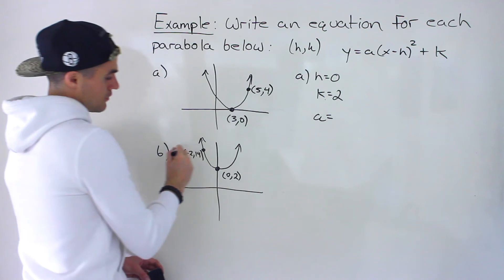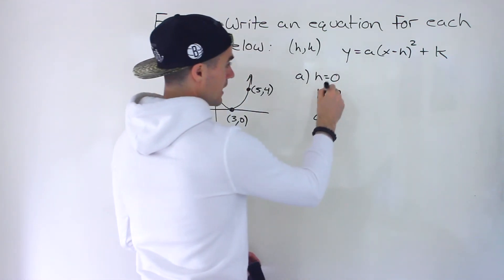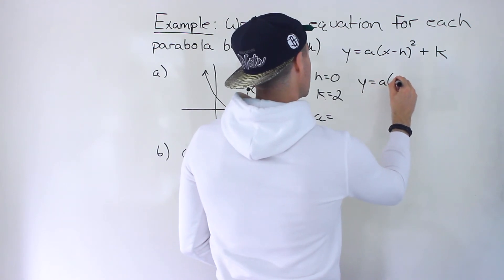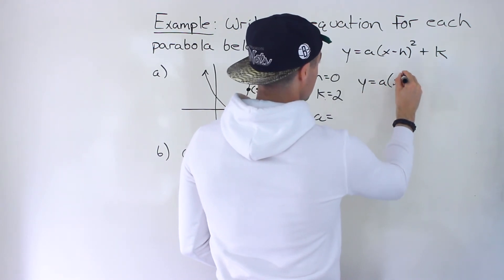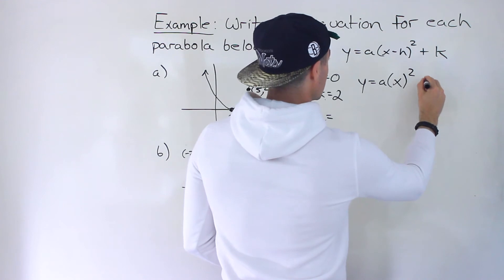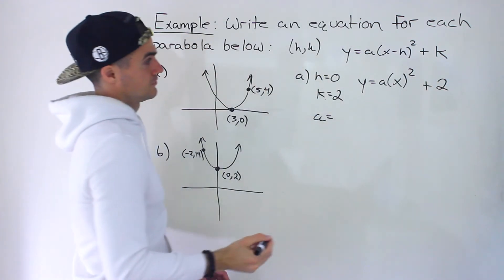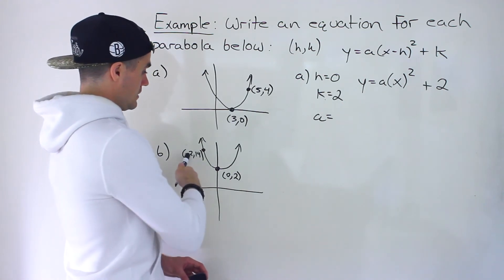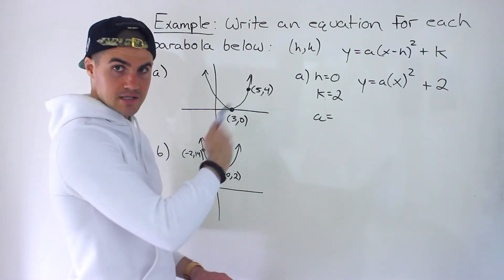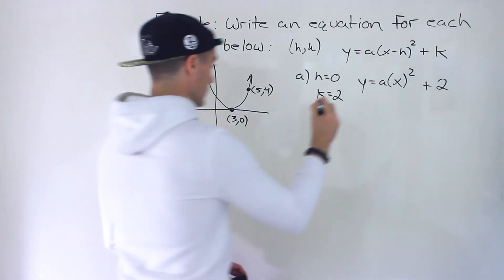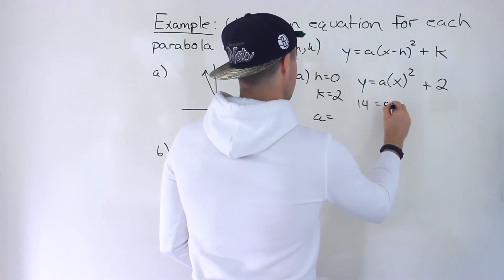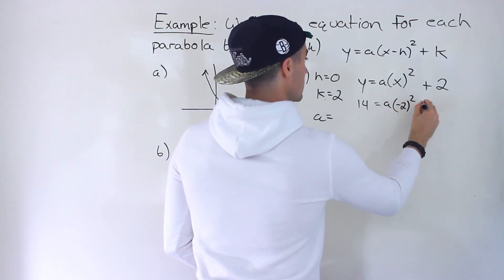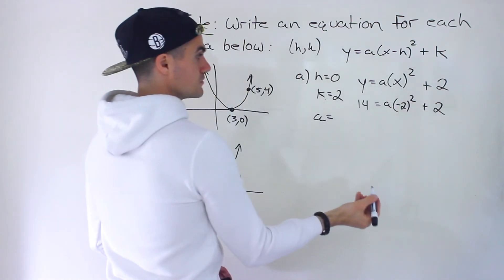And we can use this other point, negative 2 and 14. So first, we plug in the H and K here. So we'll have Y equals A, X minus 0. So that's just going to be X squared, plus K, which is 2, like that. And so now, we can plug in negative 2 and 14 for X and Y, respectively, solve for that A value. So we'd have 14 equals A, negative 2 squared, plus 2, like that.